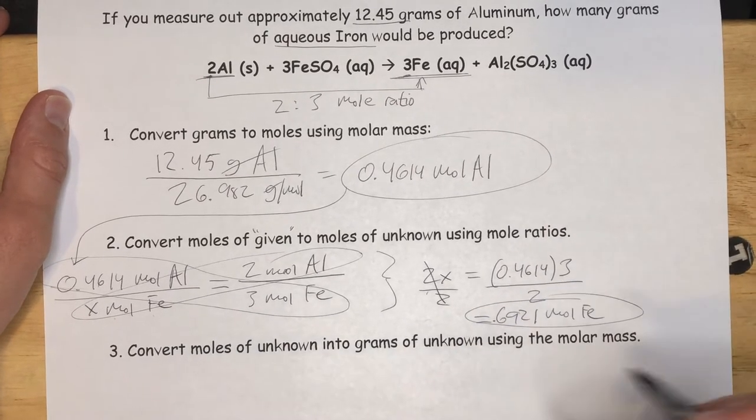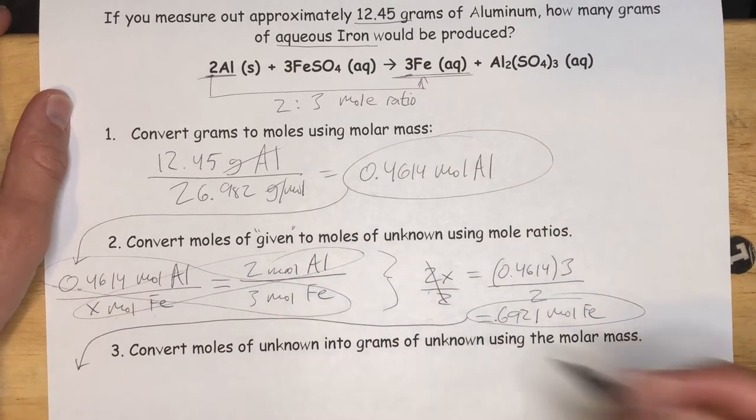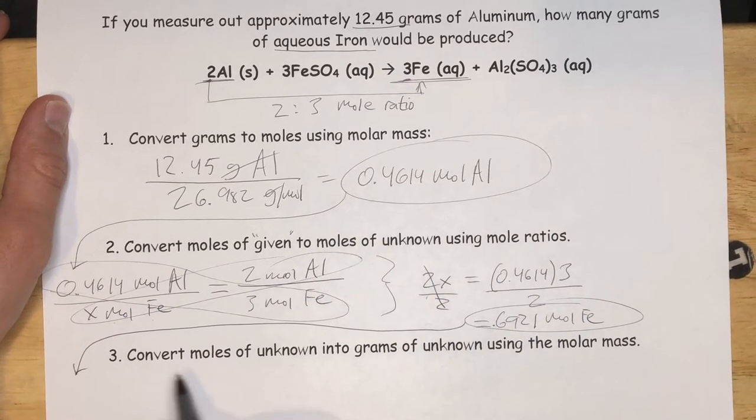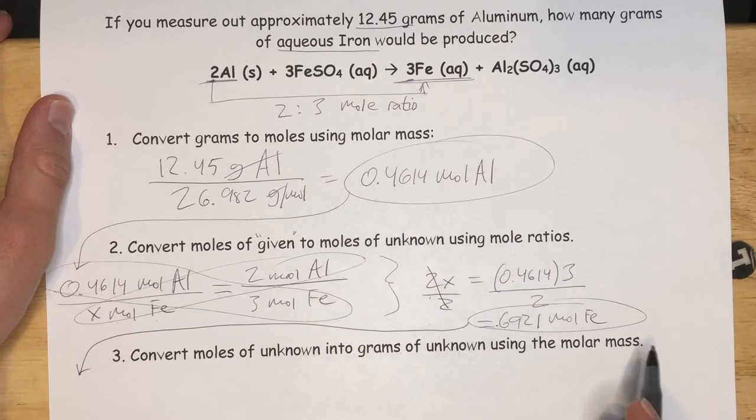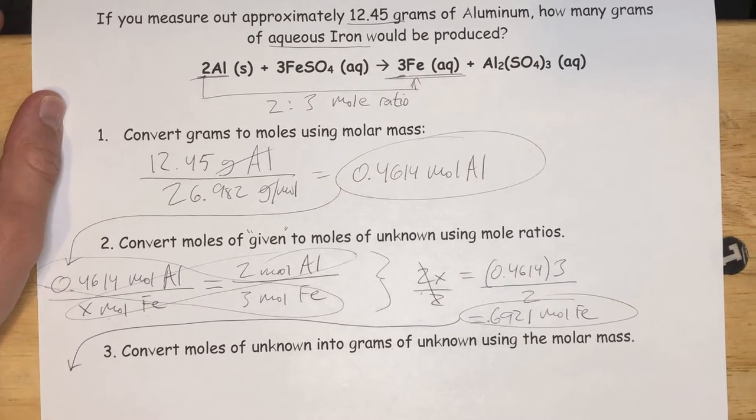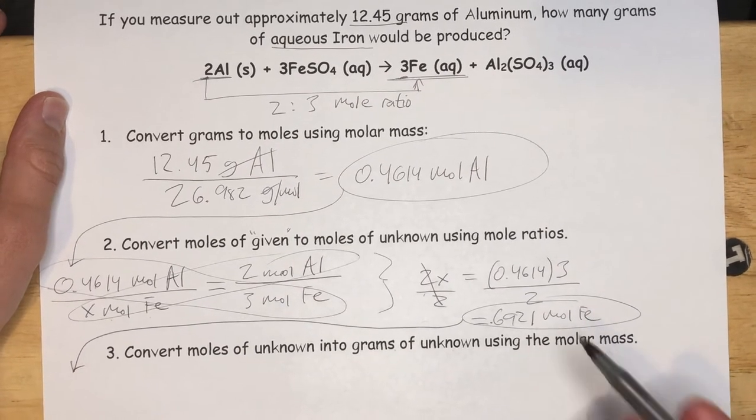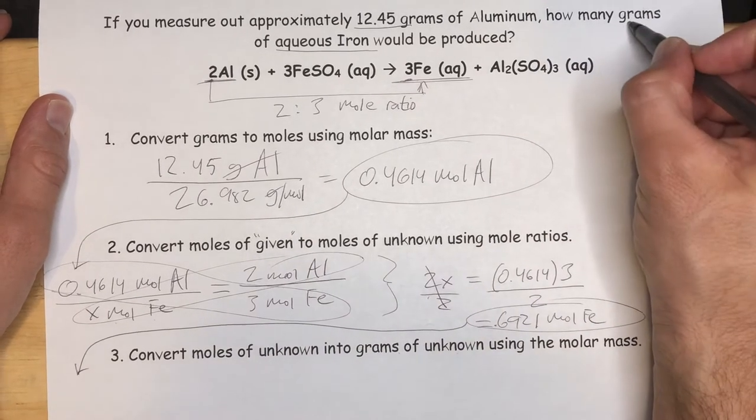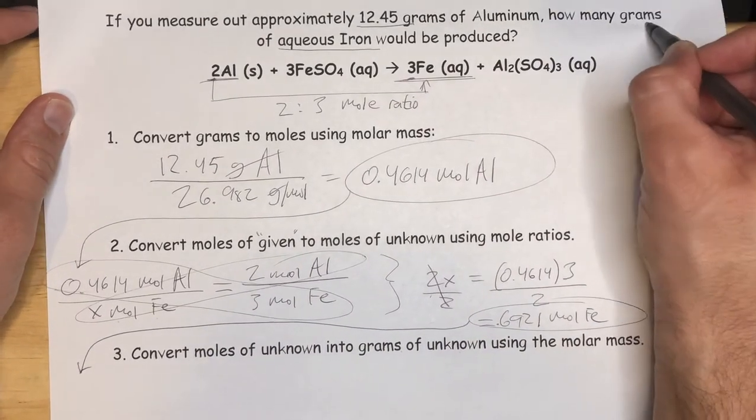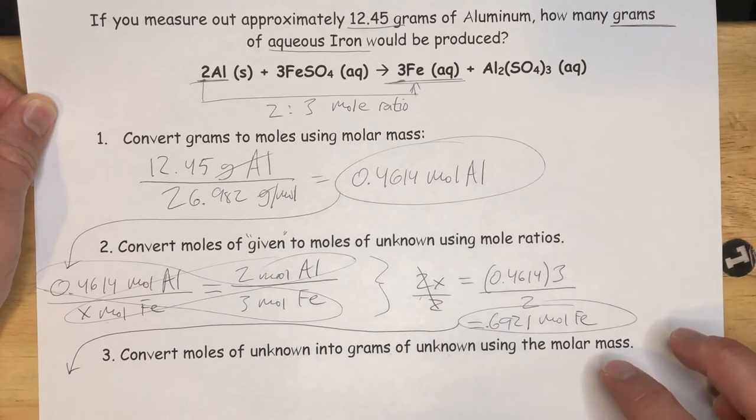And similarly to step one to two, we're going to use this in step three. So step three says, convert moles of unknown into grams of unknown using the molar mass. Why do we do this step? We sort of found the number of amount of iron that was produced. But the problem is the question asks us how many grams of iron are produced. When the question asks us for grams, we got to turn our answer into grams.